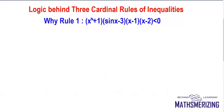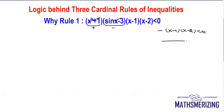So in this inequality, x squared plus 1 is always positive, and sin x minus 3 is always negative. So I'll remove them and then write it as minus (x minus 1)(x minus 2) less than 0. The roots are 1 and 2, giving signs: minus, plus, minus.